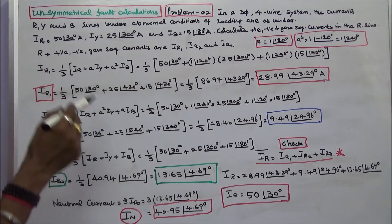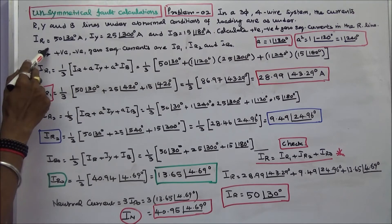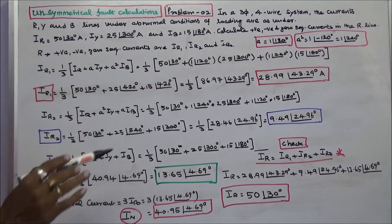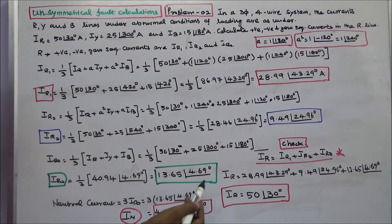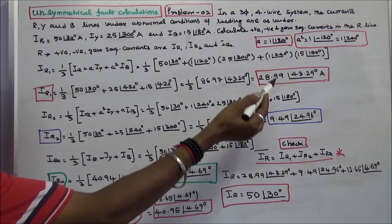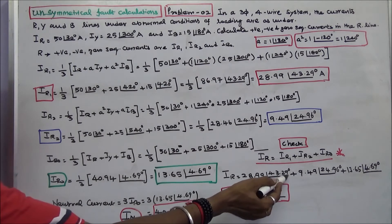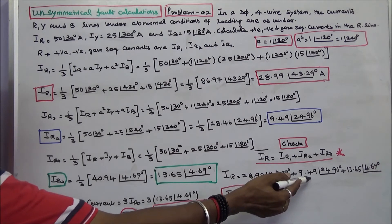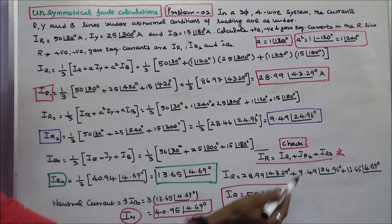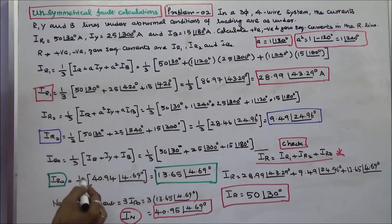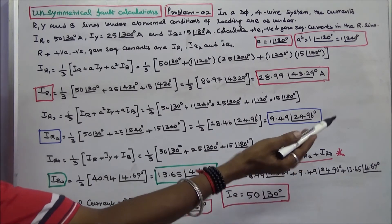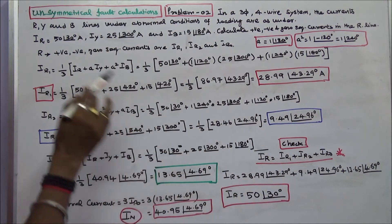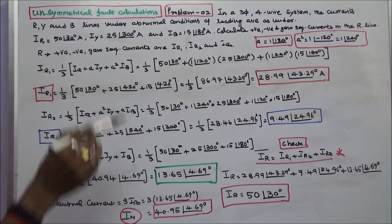The line current IR is equal to the vector sum of IR1 plus IR2 plus IR0. IR = 28.99 angle 43.29 degrees + 9.49 angle 24.96 degrees + 13.65 angle 4.69 degrees, which equals 50 angle 30 degrees. This verifies the result.